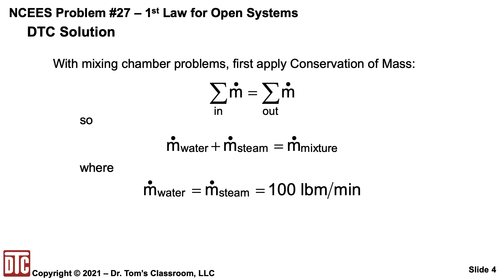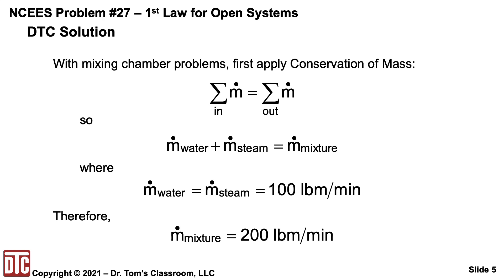This is where it comes out to look like an average. Therefore, the mixture flow rate is 200 pound-mass per minute.